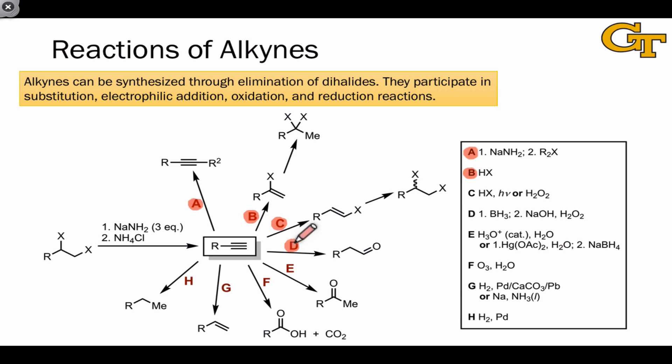Hydroboration of terminal alkyne gives an aldehyde through an anti-Markovnikov process, while acid-catalyzed hydration gives an internal carbonyl compound, or a ketone. Keep in mind that both of these involve tautomerization of an intermediate enol to the more stable carbonyl isomer, or keto form.